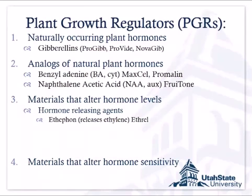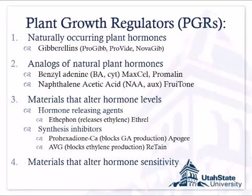We can also use synthesis inhibitors. Prohexadione calcium, sold as Apogee, blocks gibberellins. If gibberellins promote growth and I stop their production inside the plant, then it's a growth retardant. AVG is the active ingredient in Retain, and that is an ethylene blocker — it blocks the plant from being able to produce ethylene.